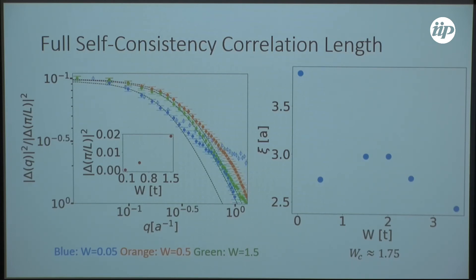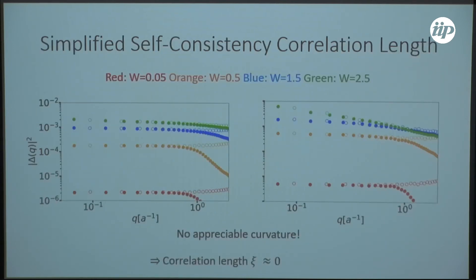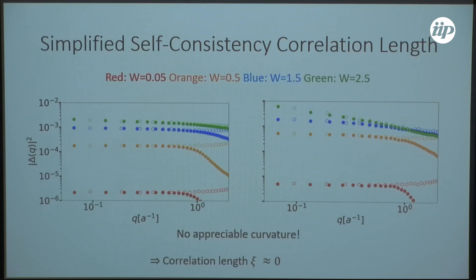Comparing this to the reduced self-consistency schemes — to the right, the scheme with the Hartree shift, and here the energy-only scheme — we see they don't have any appreciable curvature, which means the correlation length is roughly zero. So we cannot see this effect at all, and even on the level of disorder-averaged quantities, we miss the signatures of the superconductor-insulator transition.